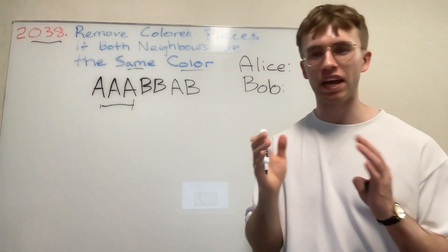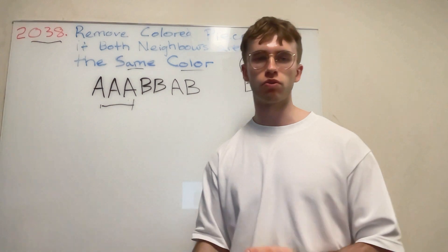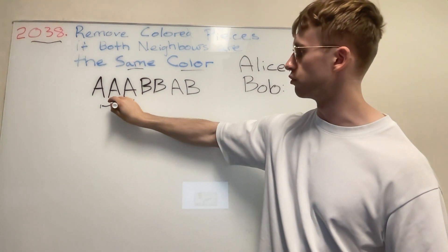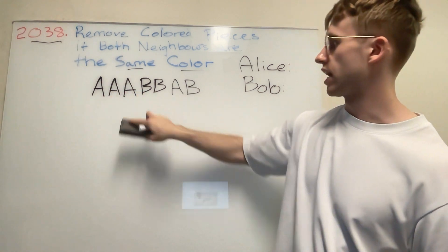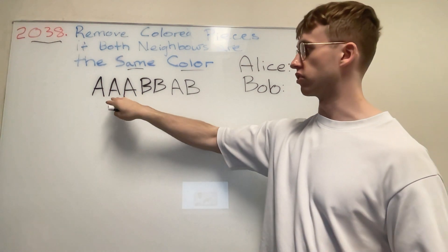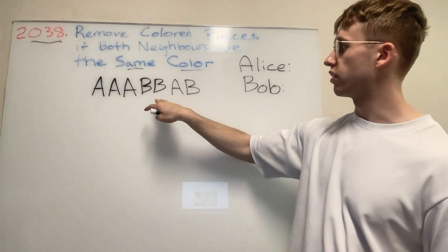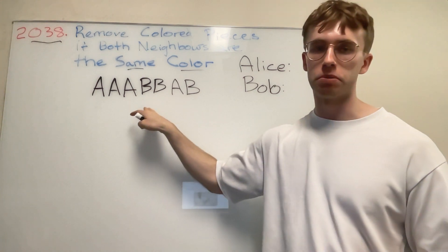There can't be any letter B's between them, has to be three letter A's in a row, and Alice will remove the piece in the middle. One constraint is that naturally Alice is only removing letter A's, Alice cannot remove any letter B's.